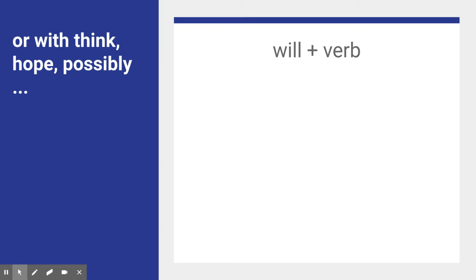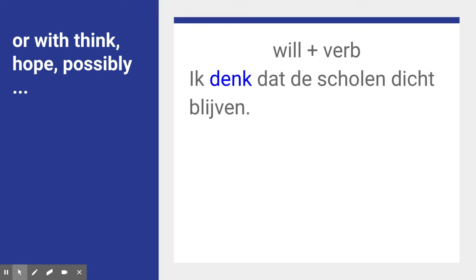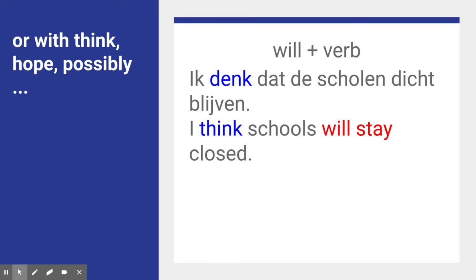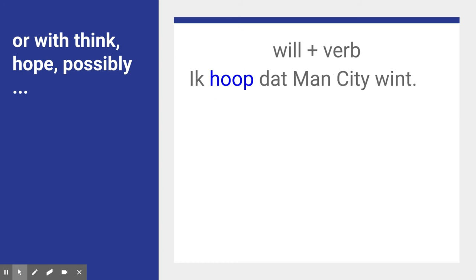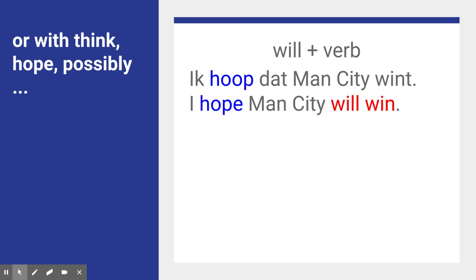Sometimes, with the verbs 'think' or 'hope', or words like 'possibly' or 'probably', you also use 'will' plus verb. So 'ik denk dat de scholen dichtblijven' is 'I think schools will stay closed'. Or 'ik hoop dat Man City wint' — 'I hope Man City will win'. That is what you have to say — not 'I hope Man City wins'. You can't do that. It must be: 'I hope Man City will win'.